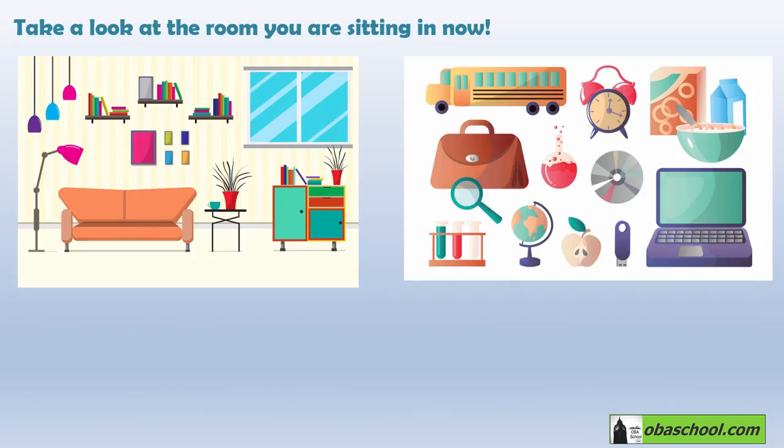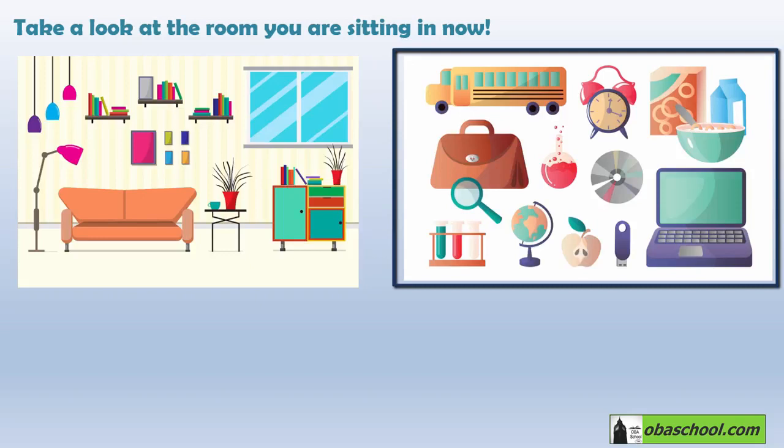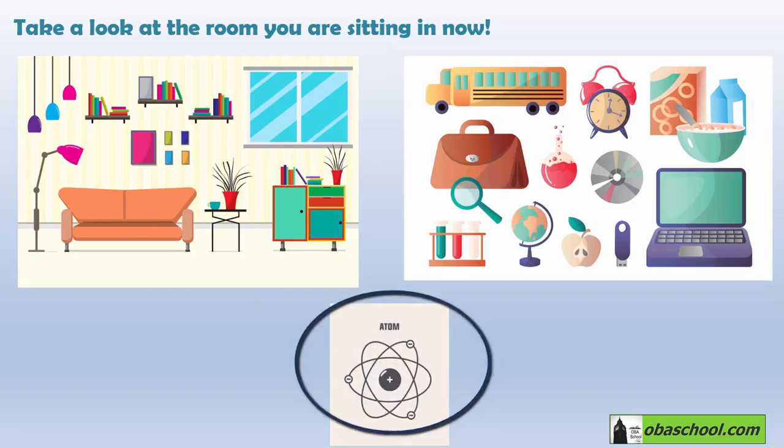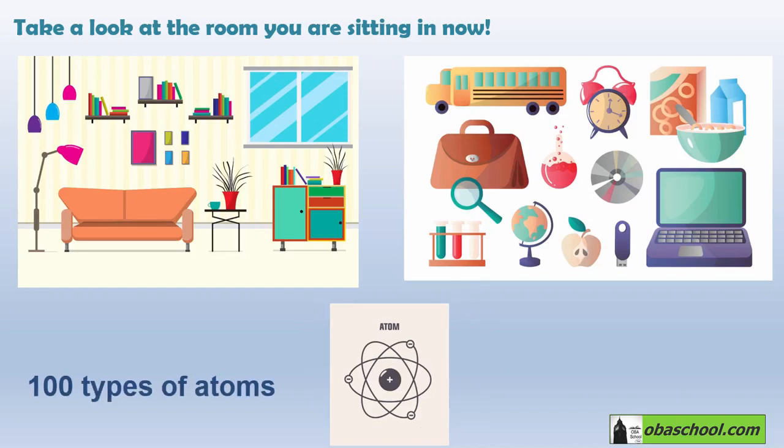However, there is one common thing between all these substances, and it is that they are made up of tiny particles which are called atoms. There are about 100 different types of atoms found naturally on Earth. These atoms combine in a huge variety of ways to give all those different substances that we use.